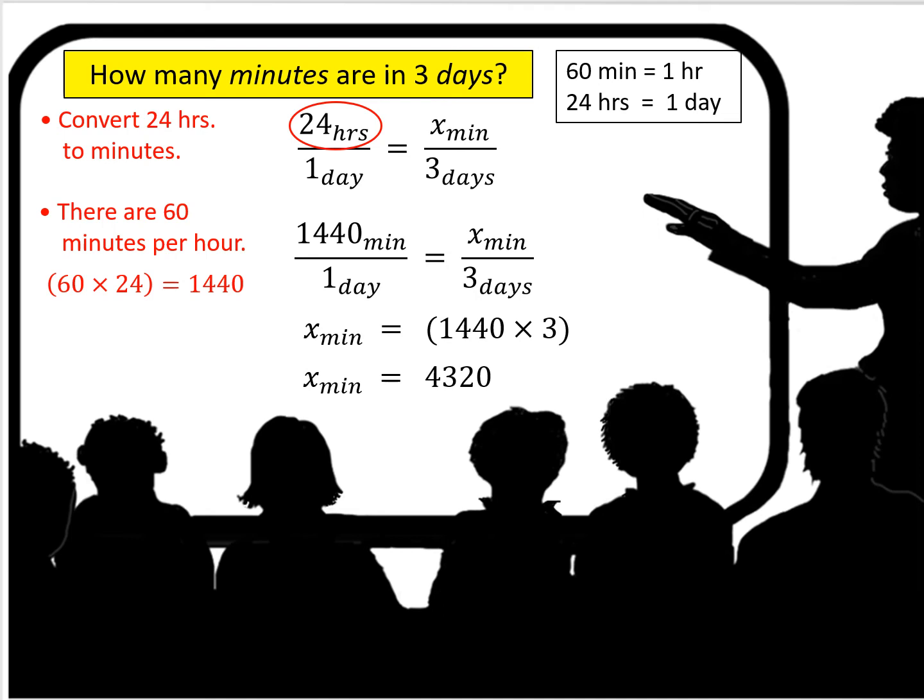Once we have the number of minutes, we now have a ratio set up that has the same units of measure. So again we use cross multiplication. And we know how many minutes are in three days. Well, it's 1,440 times 3, or 4,320 minutes.